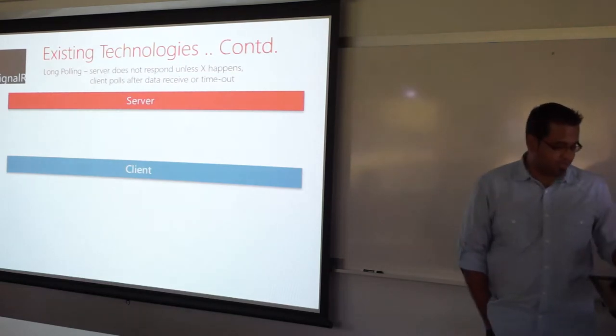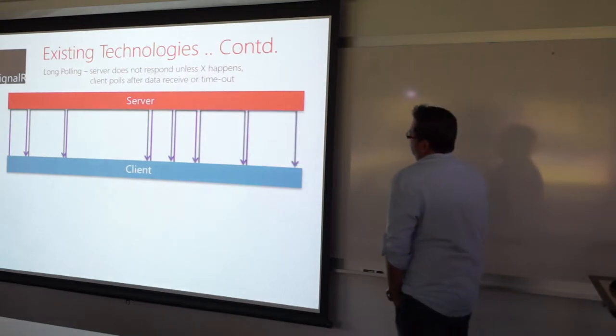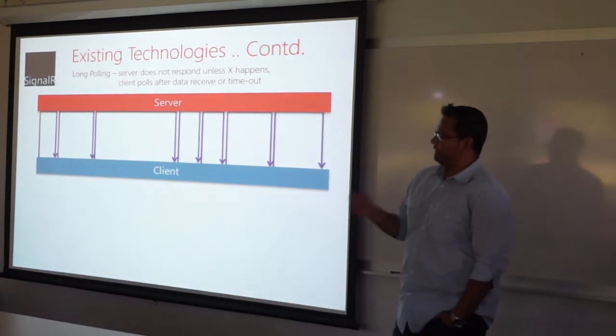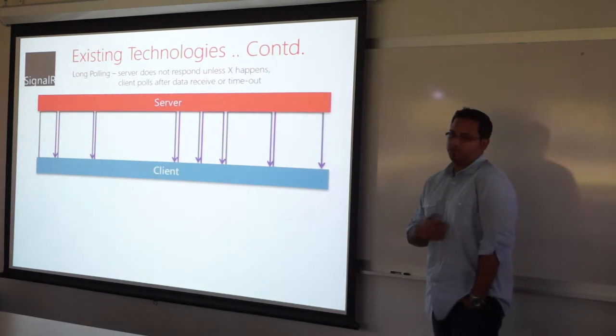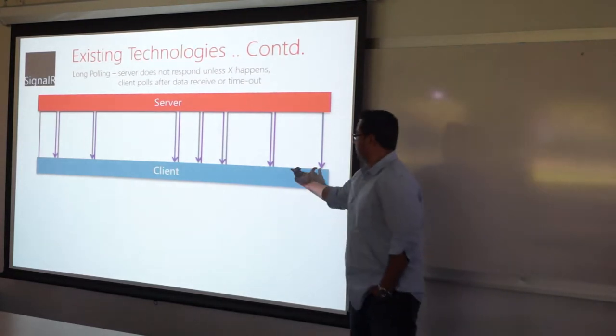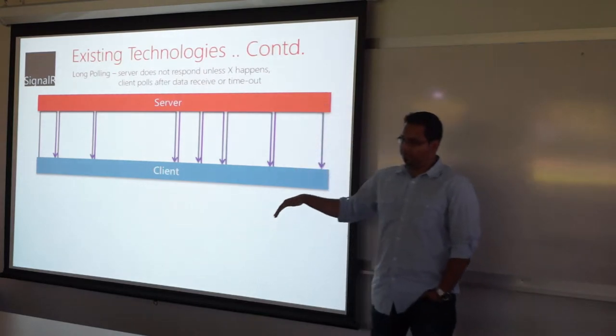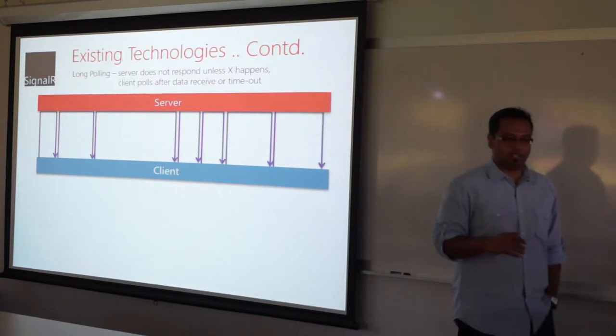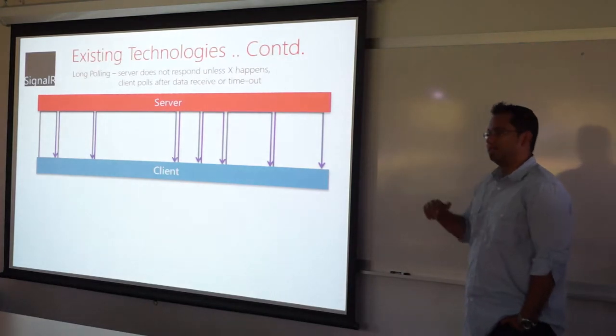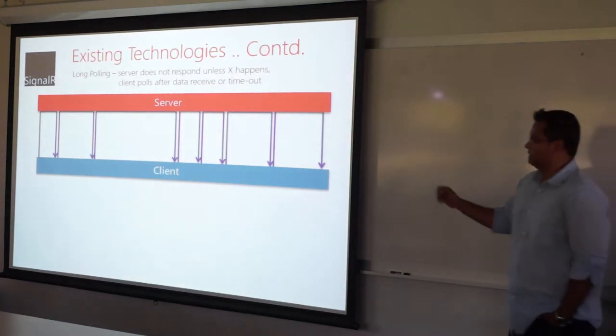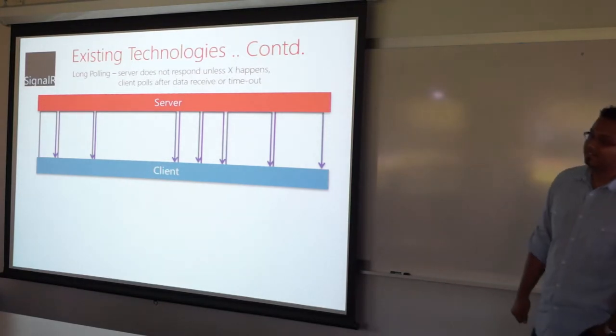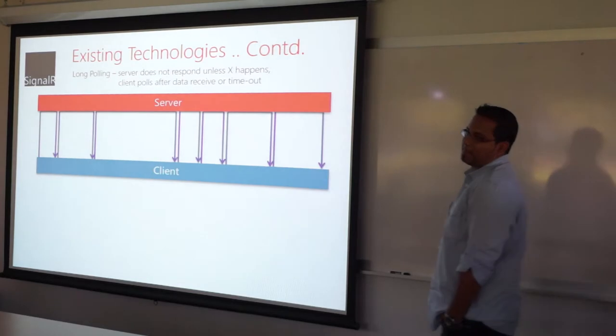Same setup, client and server, but notice the difference now. The client goes back up to the server on the first try to say, do you have something? And the server, instead of getting back to the client right away, simply sits on it. I'm not going to answer back unless I have something new to say. So, you will have this interval be variable based on when the server chooses to respond. This is obviously better, a little better than Ajax polling, because one, you're not wasting a whole lot of bandwidth, and two, the server hopefully can get to the client the moment something interesting happens.